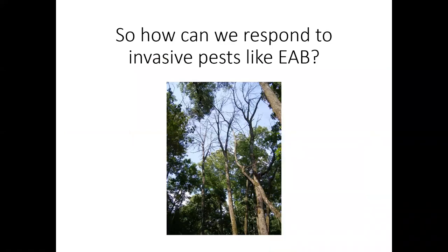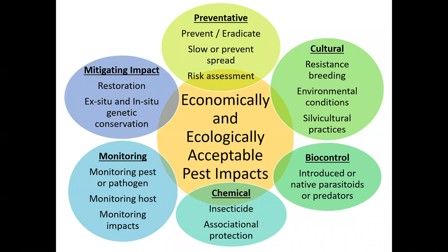So how can we respond to invasive pests like the emerald ash borer? Integrated pest management is one way — a strategy where you use a number of different approaches to achieve the central goal of economically and ecologically acceptable pest impacts. This includes preventative measures, cultural control measures, biocontrols, chemical controls, monitoring, and mitigating the impacts of the invasive pest. I'll be talking today about resistance tree breeding, chemical controls with insecticide, monitoring work, and some genetic conservation work.